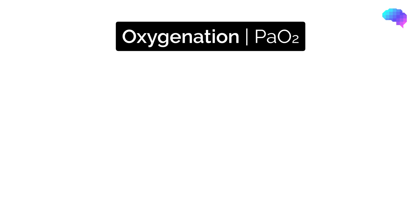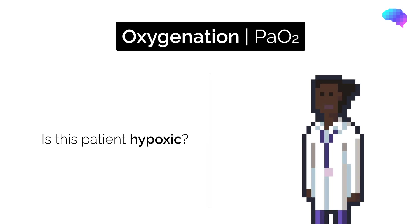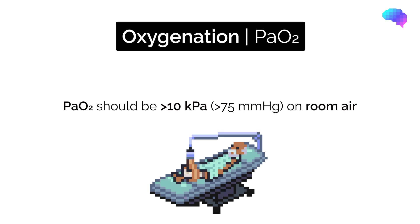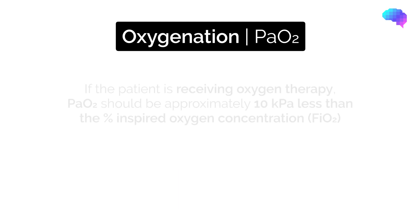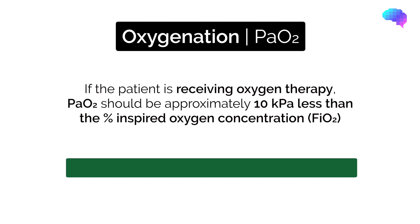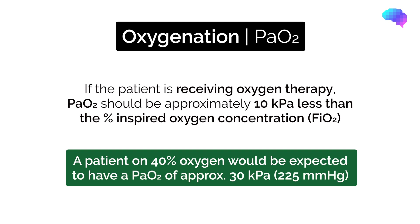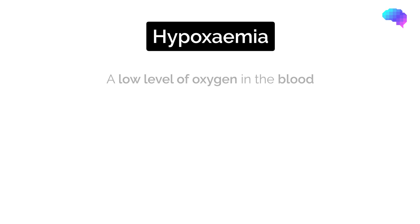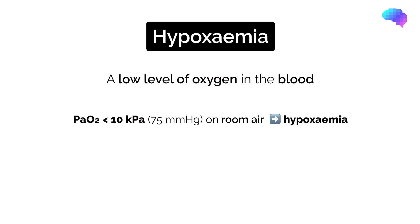Your first question when looking at the ABG should be: is this patient hypoxic, as hypoxia is the most immediate threat to life. PaO2 should be over 10 kilopascals when oxygenating on room air in a healthy patient. If the patient is receiving oxygen therapy, their PaO2 should be approximately 10 kilopascals less than the percent-inspired concentration FiO2, or fraction of inspired oxygen. So a patient on 40% oxygen would be expected to have a PaO2 of approximately 30 kilopascals. Hypoxemia is a below-normal level of oxygen. If the PaO2 is less than 10 kilopascals on air, a patient is considered hypoxemic.